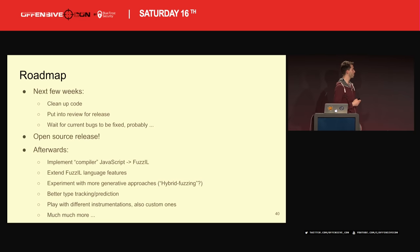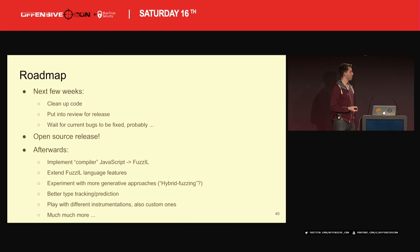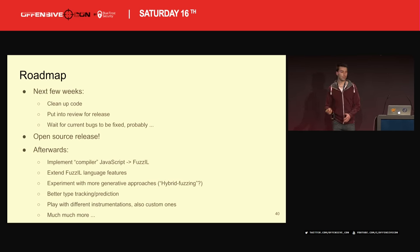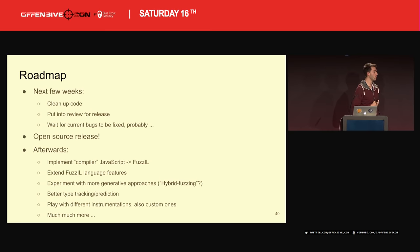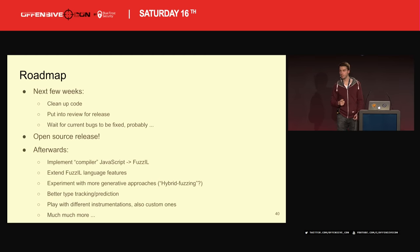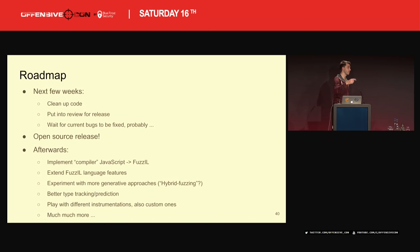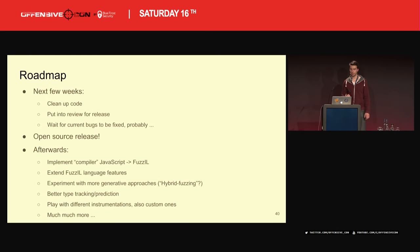My roadmap: right now I want to do some more cleaning up. Since I'm at Google, I have to put it into review before open sourcing it. I should probably also wait for the current set of bugs I reported in the last weeks to get fixed. But then I want to open source it — aiming for about a month, but we'll see. Afterwards, I have a lot of things I want to try: importing existing JavaScript code, since right now it starts from one hard-coded sample and keeps mutating that. The Fuzz IL doesn't cover all language features yet. I'd also like to try a hybrid approach generating samples in multiple steps, and I definitely need better type tracking and custom instrumentation.